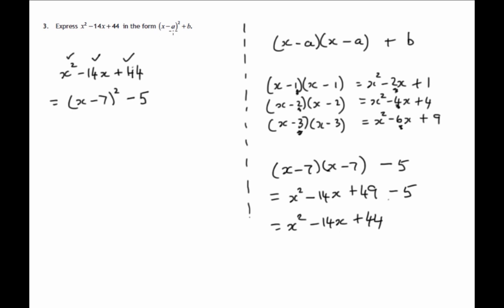So you'll notice that the value of a is 7 and the value of b is minus 5. But that's all that we were asked for. We weren't asked for the value of a and b. We were asked to write it in that form, which we've done.